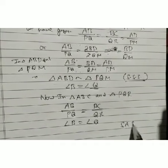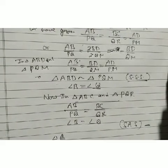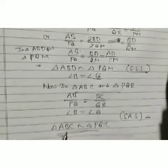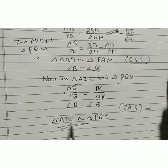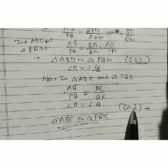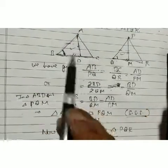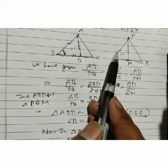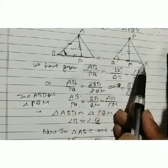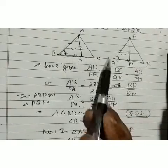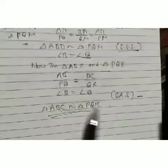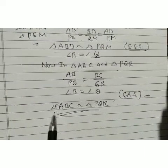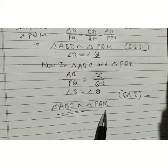Since two sides are in proportion and the included angles are equal, we can use the SAS similarity criterion. Therefore triangle ABC is similar to triangle PQR by SAS similarity. This completes the proof of the first problem.